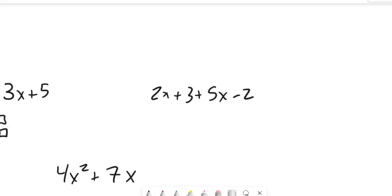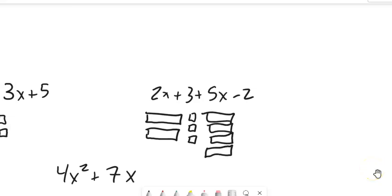2x plus 3, so 2x's plus 3 ones, 5x's, and then negative 2 ones, or minus 2. So you could think of this two ways. You could think of it as you're taking away two of these ones, or you could say if you just shade them, they'll be negative, negative 2.